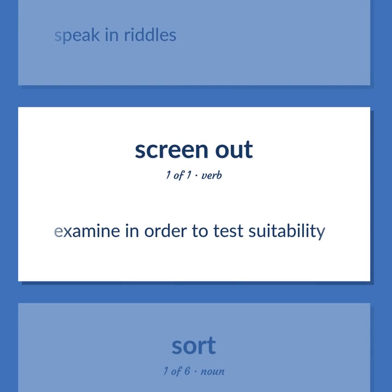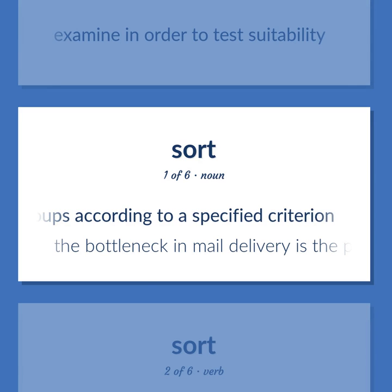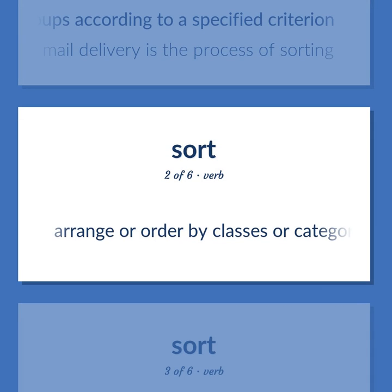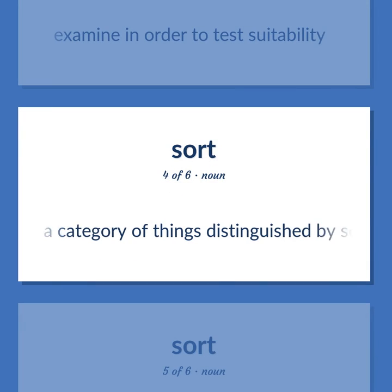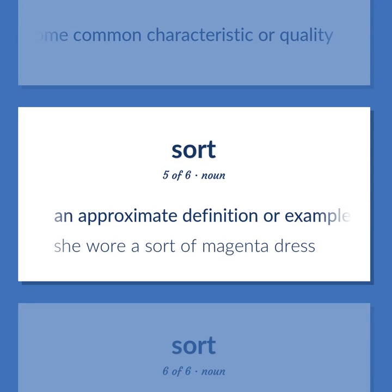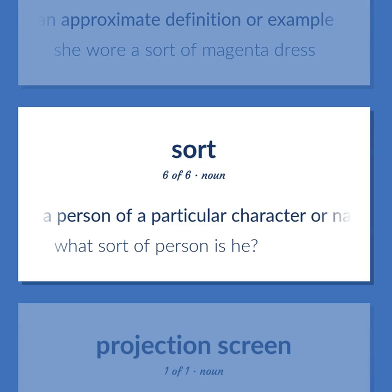Examine in order to test suitability. An operation that segregates items into groups according to a specified criterion. The bottleneck in mail delivery is the process of sorting. Arrange or order by classes or categories. Examine in order to test suitability. A category of things distinguished by some common characteristic or quality. An approximate definition or example. She wore a sort of magenta dress. A person of a particular character or nature. What sort of person is he?